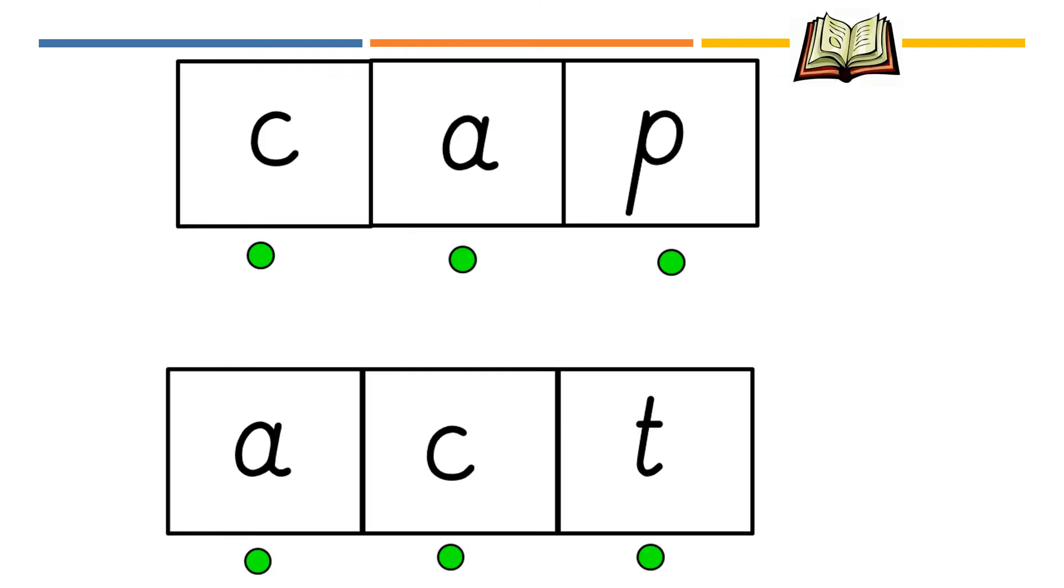We are ready to practice blending some sounds together to make a word. Can you see that I have some graphemes written on the board and a sound button underneath? Do you remember that we touch those sound buttons with our fingers and make the phoneme for that grapheme? Let's read the first word together, putting our finger on those sound buttons. Are you ready? C-a-p. And quicker. C-a-p. C-a-p. Cap. The word is cap.